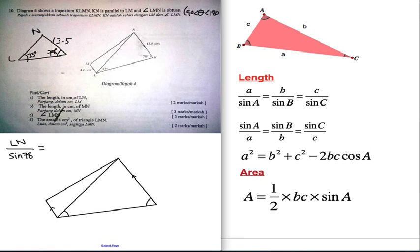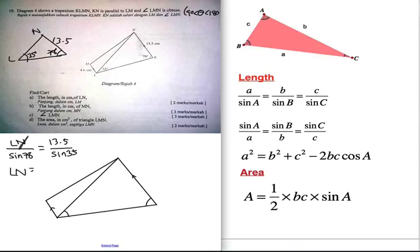So LN over sin 78 equals 13.5 over sin 35. You just move sin 78 to the other side and press the calculator: 13.5 divided by sin 35, then multiplied by sin 78. You can easily get the length LN as 23.02, so approximately 23 cm. That's part A — it's not really hard.